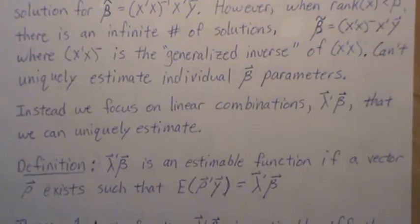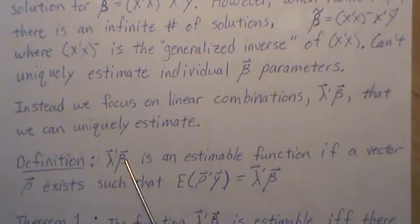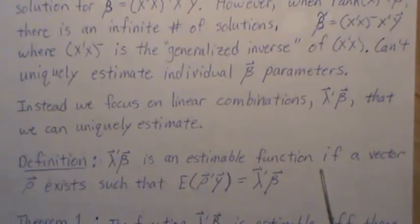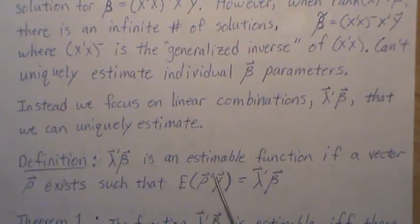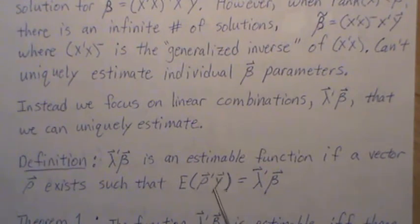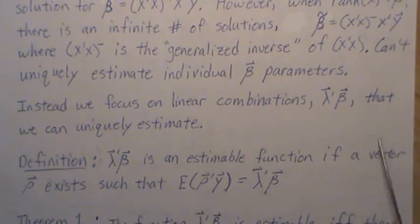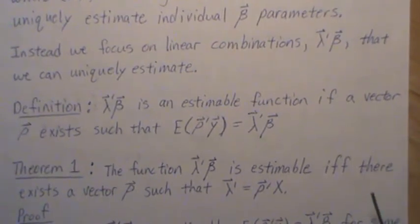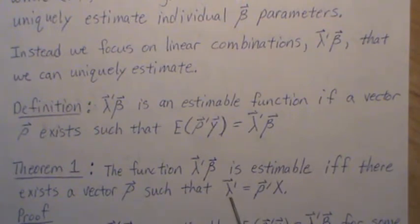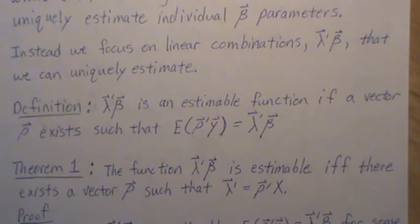So the definition is: this function — a linear combination of the betas — is estimable if a vector rho exists such that the expected value of the linear combination of the y's is unbiased for this function, then it's considered estimable. Now Theorem 1: the function is estimable if and only if there exists a rho such that lambda equals rho prime x, meaning it's a linear combination of the row space of x.